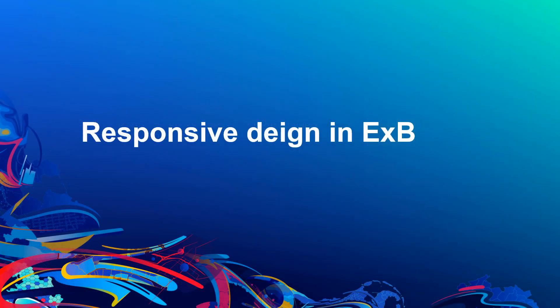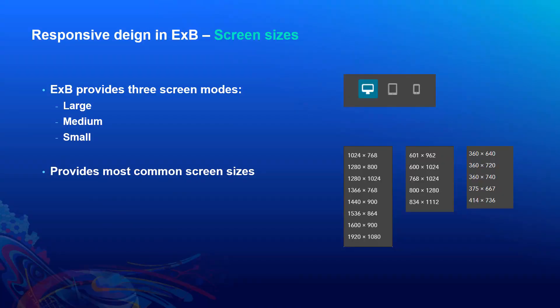How does Experience Builder support responsive design? Experience Builder categorizes devices into three types: large screen, medium screen, and small screen. Experience Builder provides those three screen modes for you to edit and preview, and in each mode it also provides some common sizes. The large mode refers to desktop screen sizes, medium usually corresponds to tablet screen sizes, while small mode has screen sizes for mobile devices.